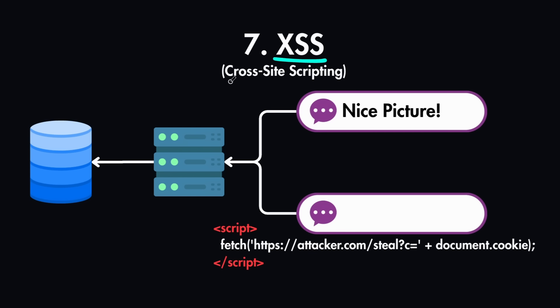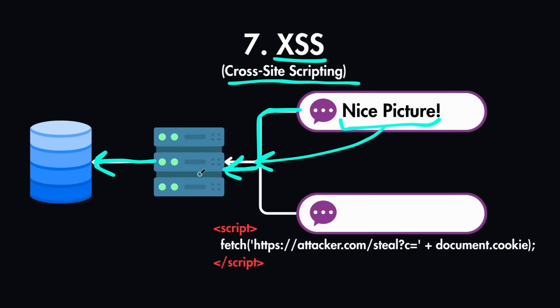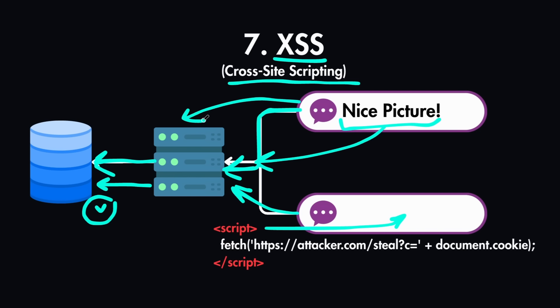The last technique is XSS, or Cross-Site Scripting. This lets attackers inject scripts into web pages served to other users. For example, if you have a comment section that submits to your API, you can get normal comments like 'nice picture,' which get stored in the database — that's fine. But an attacker could place a malicious script in the comment, trying to fetch cookies or inject something into your database. If you allow this, it gets written to the database, and later when other users load the comments section, the injected script is delivered directly into their browser and executed as malicious JavaScript.